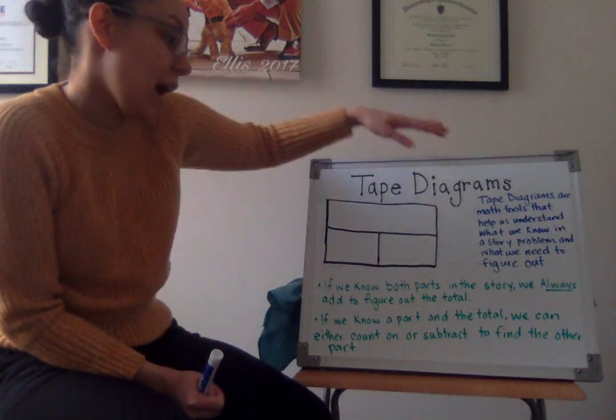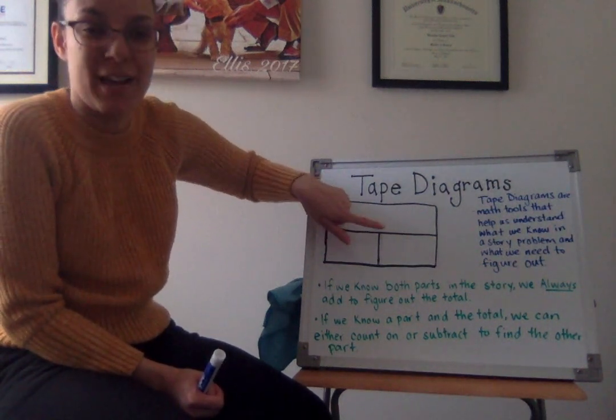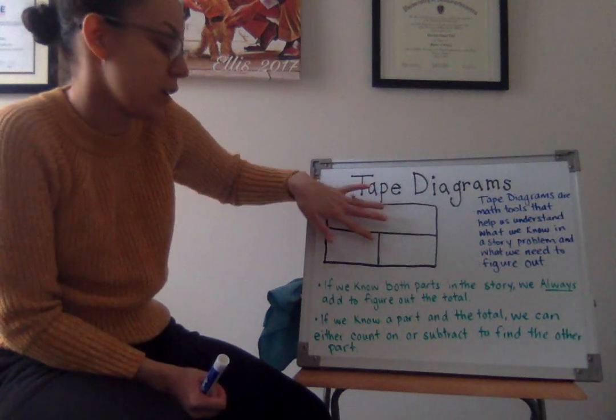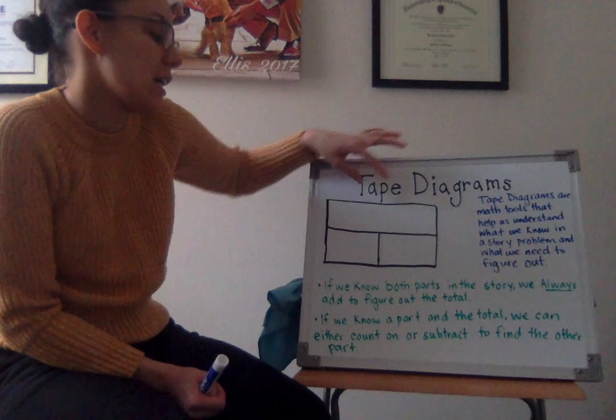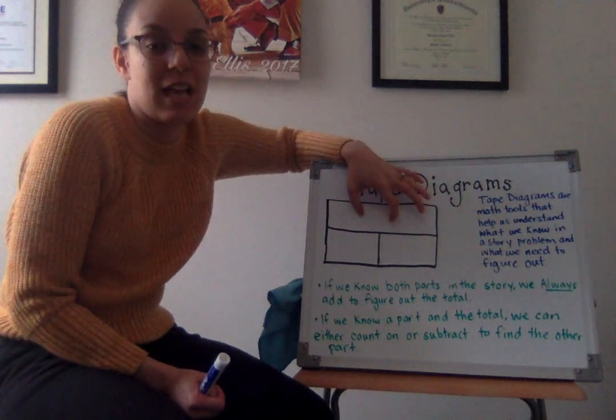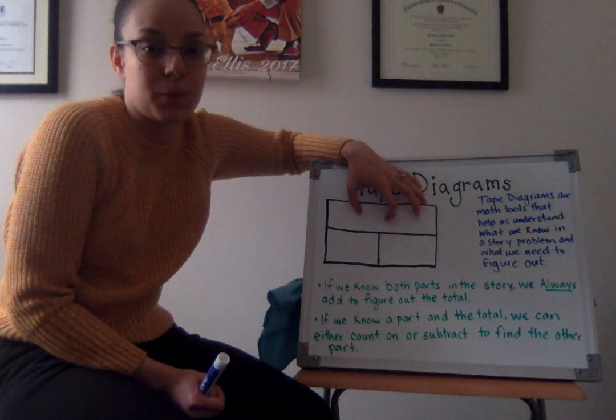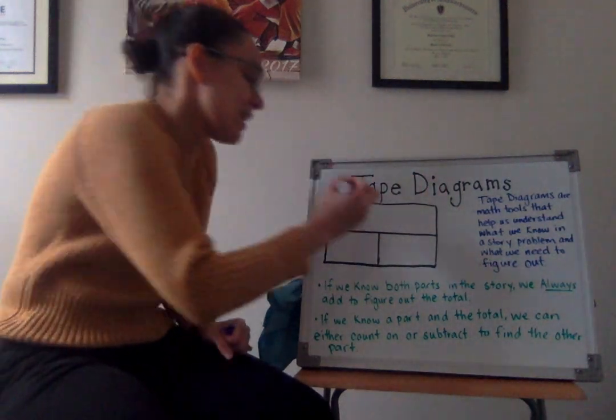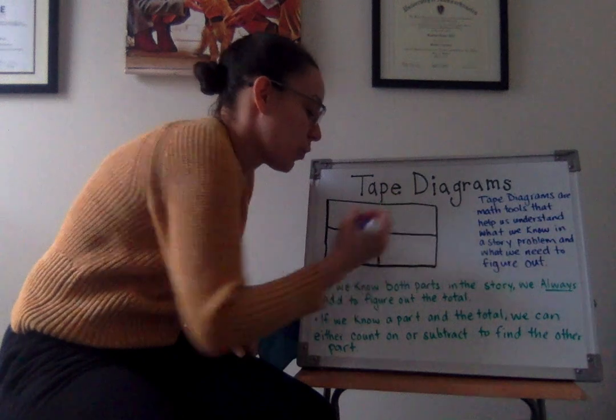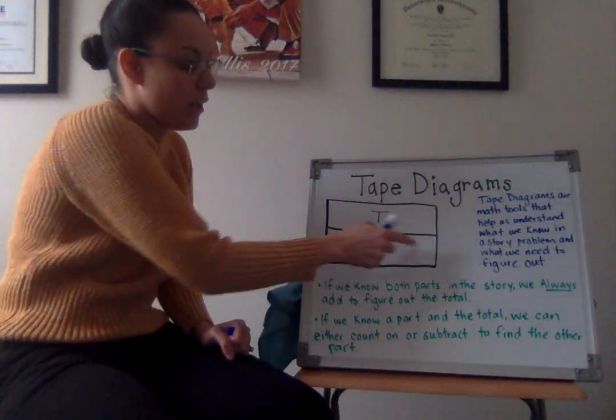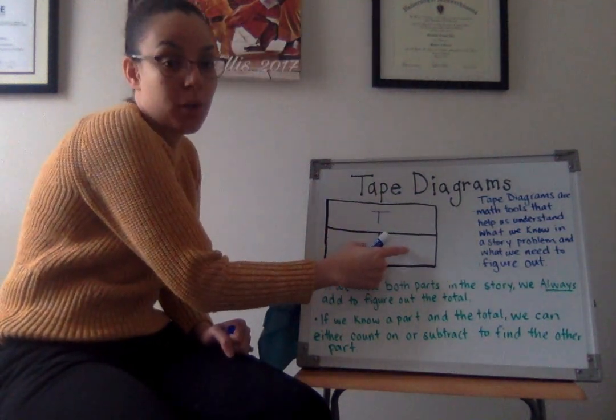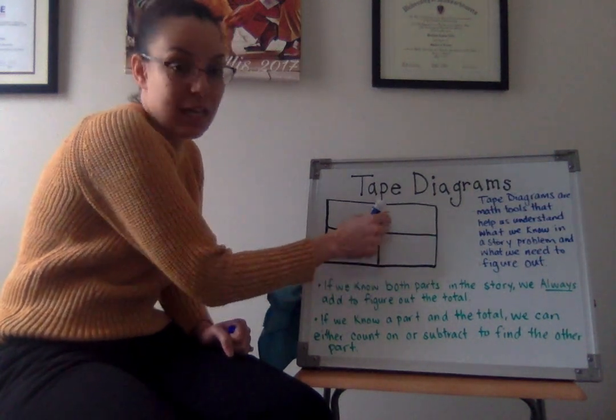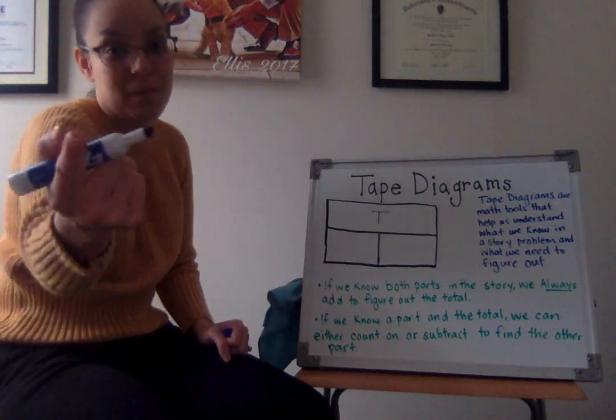So just looking at this tape diagram is really similar to a number bond. Looking at these three parts, what do you think should go is represented in the top box? The part or the total? You got it. In the top box is the total. I know because the two smaller pieces are the parts, and when you add them together, it equals the total.